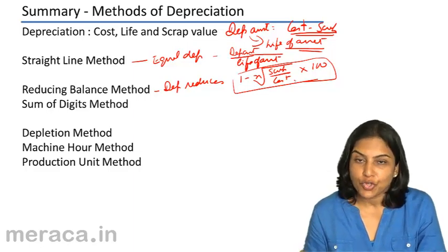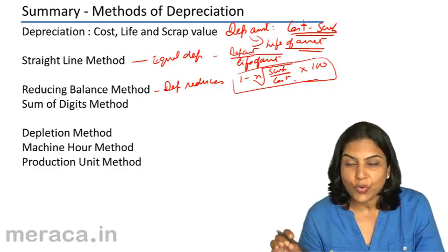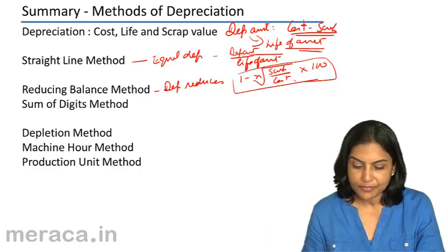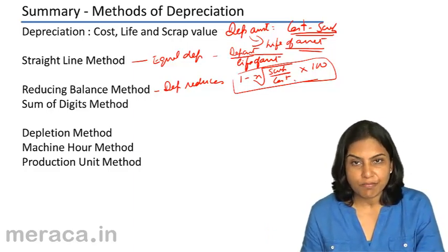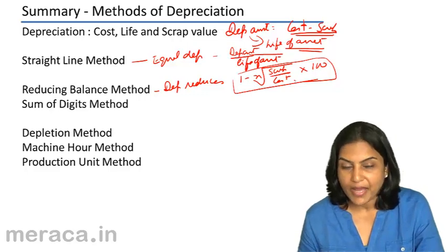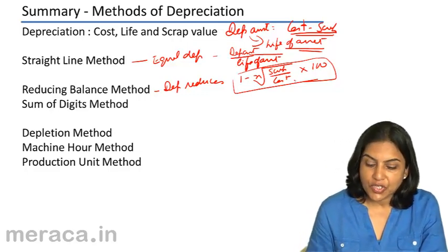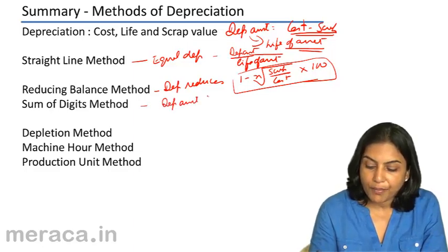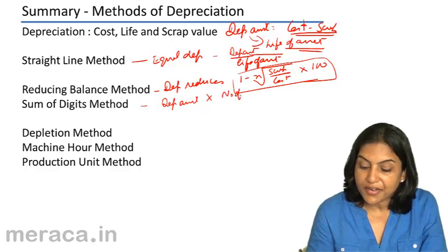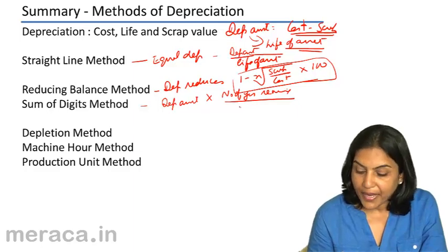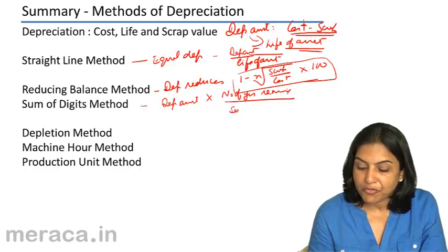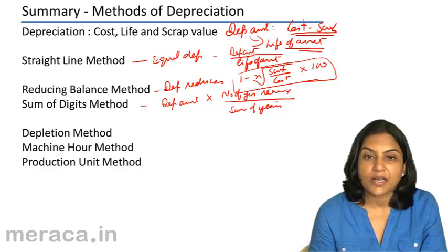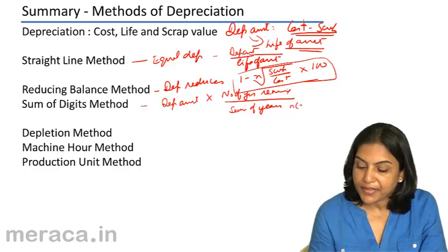Depreciation goes on decreasing while repairs goes on increasing, so that a more or less uniform total charge is maintained during the life of the asset towards the cost of running the machine. The sum of digits method is a variation of the reducing balance method where depreciation is charged as the depreciable amount multiplied by the number of years remaining (including the current year) divided by the sum of the years digits, calculated simply as n × (n+1) / 2.